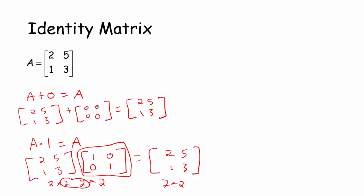The zero matrix has all zeros, while the identity matrix has 1s along the diagonal and 0s everywhere else. To avoid confusion with the number 1, the identity matrix is commonly written as capital I.